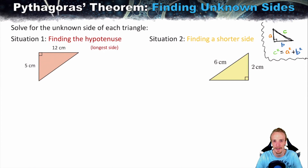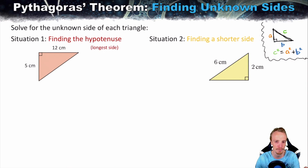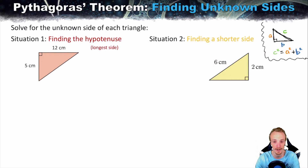How do we use Pythagoras theorem to find the unknown length of right angle triangles? There are basically only two situations you can ever be faced with, and if you know the step-by-step process of both situations with Pythagoras theorem, you'll be able to answer any question thrown at you in terms of finding unknown lengths of right angle triangles.